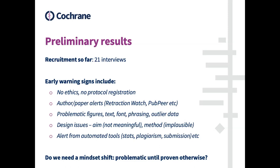Interestingly, I'm getting mixed views, but some people are suggesting that if you're doing a systematic review, you need a mindset shift — you need to assume that a study is fraudulent until you can get really good evidence that it's legitimate. That's quite different from the way we normally work in evidence-based research, and it's generating interesting views.